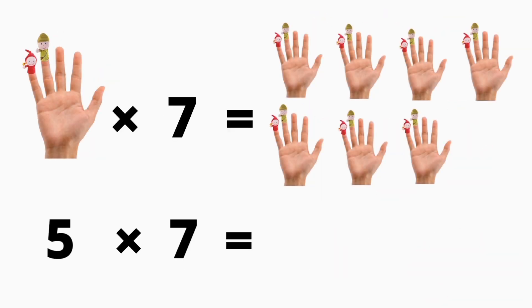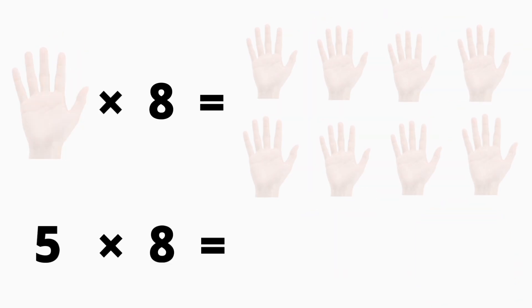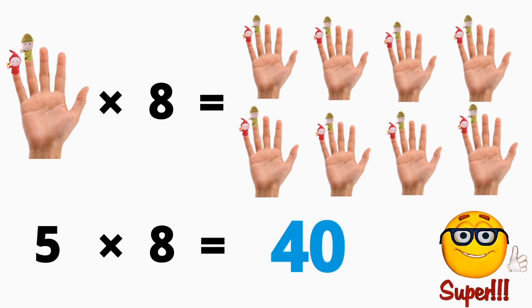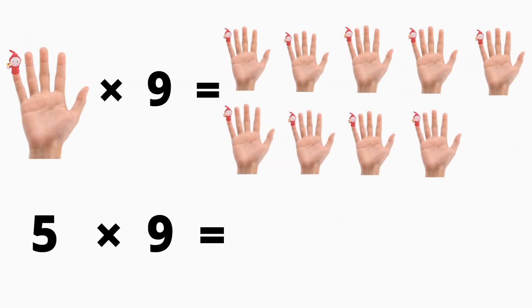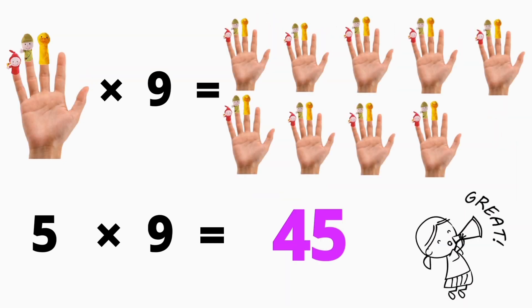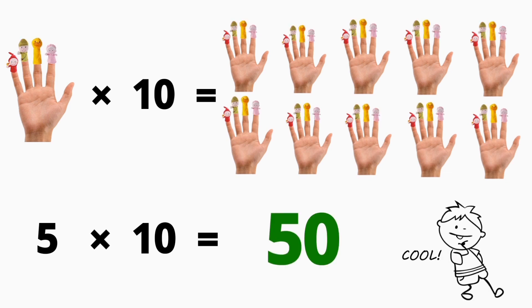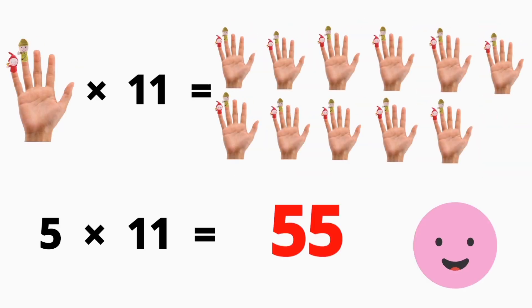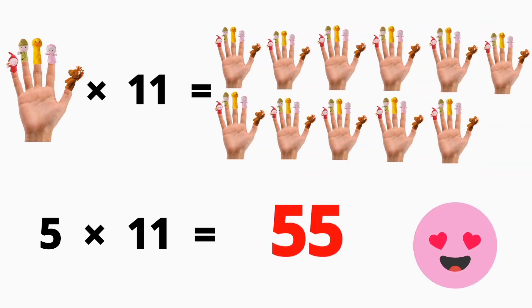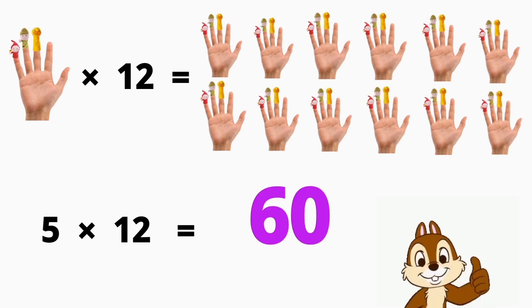5 x 7 is 35, 5 x 8 is 40, 5 x 9 is 45, 5 x 10 is 50, 5 x 11 is 55, 5 x 12 is 60.